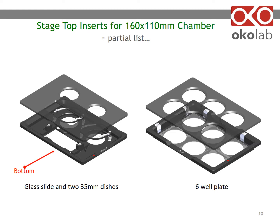Each insert has two parts: a bottom to be placed inside the chamber containing the sample, and a corresponding plate that rests on top of the chamber lid. It prevents condensation from forming so that the sample can be imaged in transmitted light as well. Here is an example for a six-well plate insert.